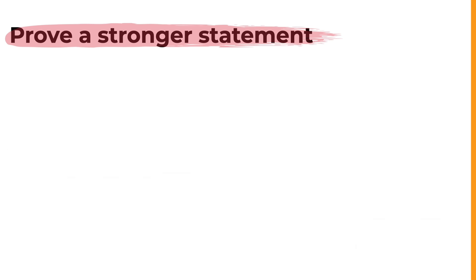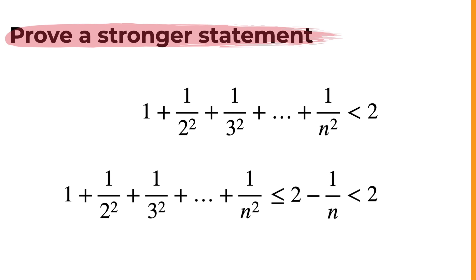For example, if you want to prove that this sum is less than two, you're better off proving the stronger claim that the sum is not only smaller than two, it's actually at most two minus one over n. Try both and you'll see for yourself.